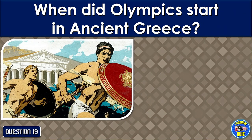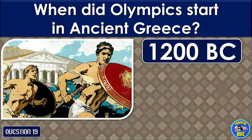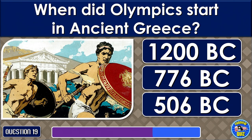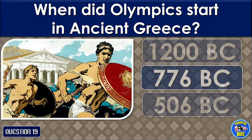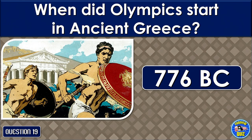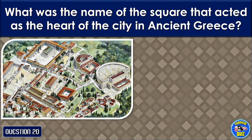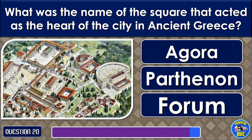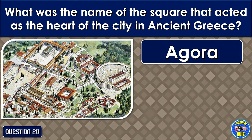When did the Olympics start in ancient Greece? What was the name of the square that acted as the heart of the city in ancient Greece? Agora.